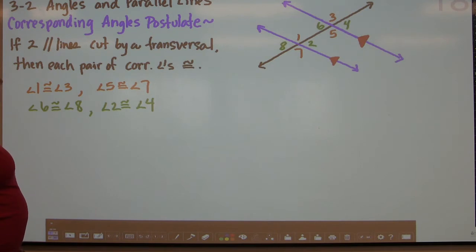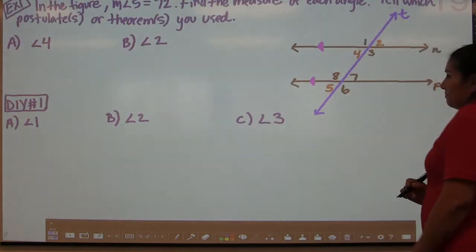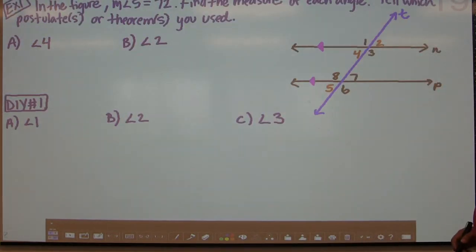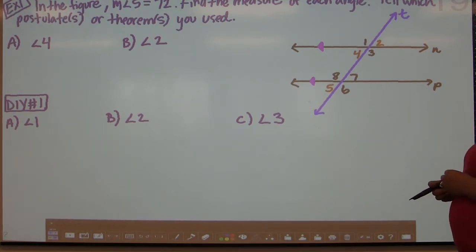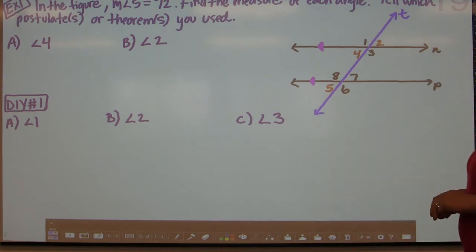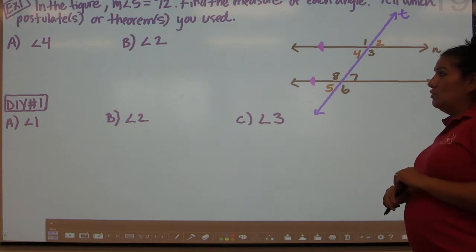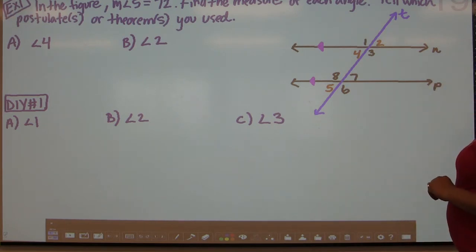So that's the postulate: if the two lines are parallel, cut by a transversal, each pair of corresponding angles is congruent. Now we're going to see what that means in this example. In the figure, the measurement of angle 5 is 72. Find the measure of each angle and tell which postulates or theorems you used to determine your answer.